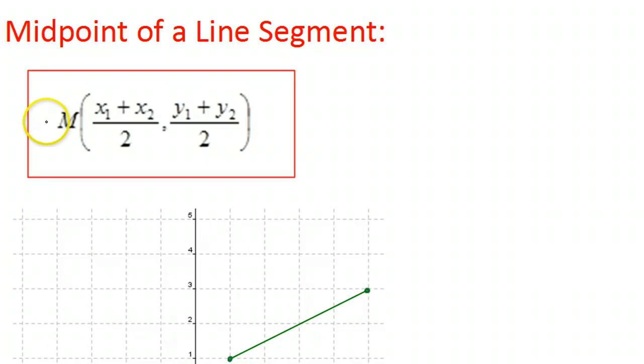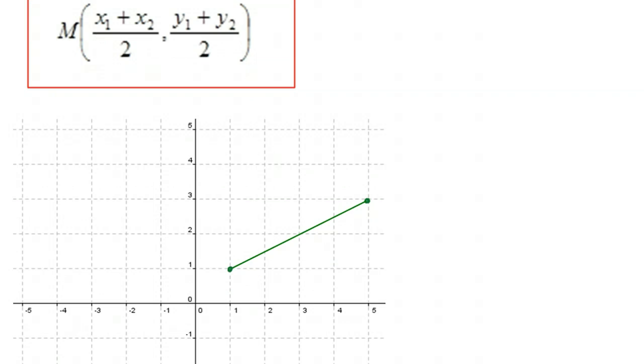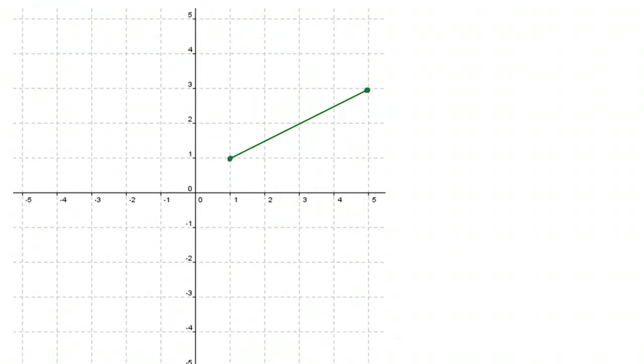So our formula is right here and we're going to start by looking at an example. So let's pretend we knew nothing about this formula and I said to you, can you please find for me the midpoint of this green line? Now you could probably very quickly say, well, the midpoint is obviously right here.